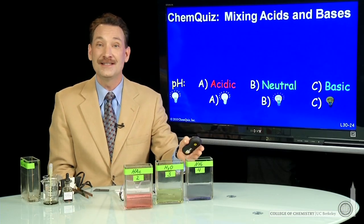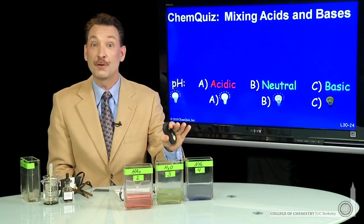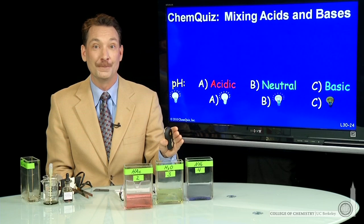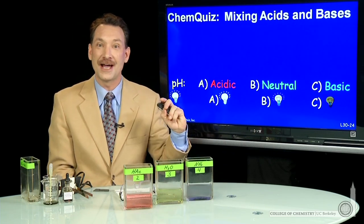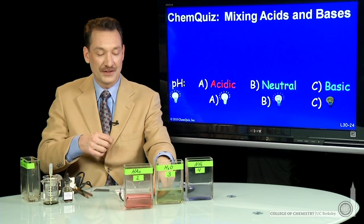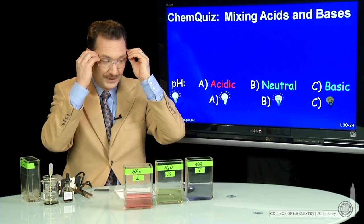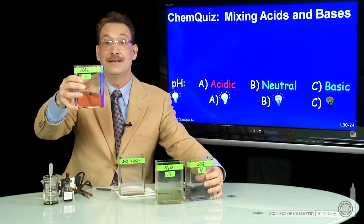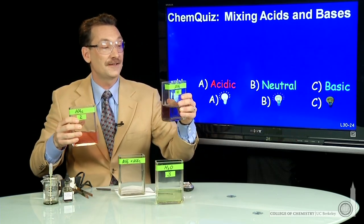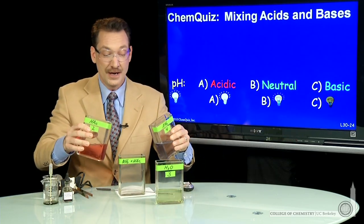Let's mix a weak base and a weak acid of equal concentration and equal volume and look at the change in pH and the ionic strength. So we can actually do the experiment. Here I have the weak acid HAC, acetic acid, the weak base NH3, ammonia.